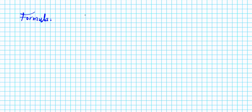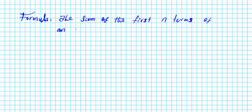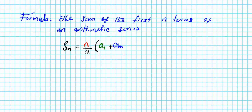Before we get started, we're going to take a look at the formula for finding the sum of the first n terms of an arithmetic series. The formula is as follows: S sub n equals n over 2 times a1 plus a sub n. This is the formula for the sum of the first n terms of an arithmetic series.